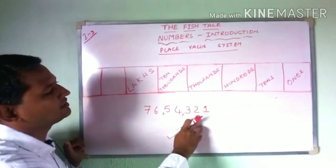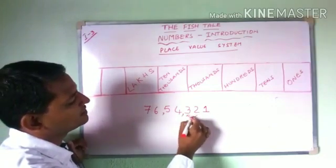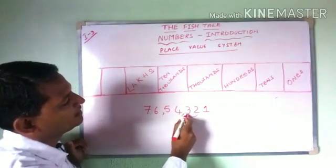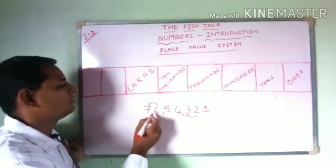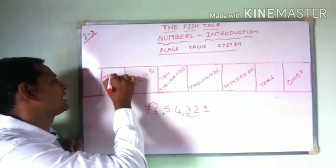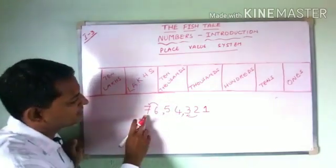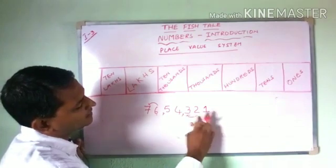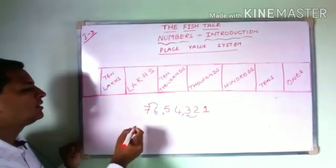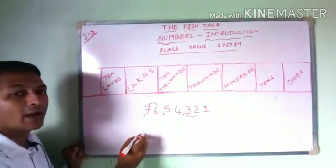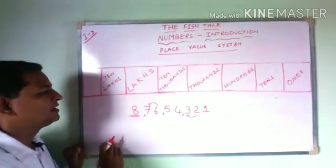From 1s to 10s the place value is 10 — towards the right the place value increases 10 times. From 10 to 100, from 100 to 1000, everywhere it is increasing 10 times. So after lakhs, writing a number to the right makes it 10 lakhs. We read this number as 76,54,321. Now if we write one more digit to the right of this and place 8 there, what is the place value of 8 called?